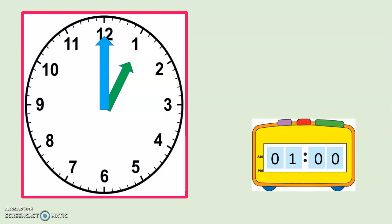Now we are going to see if we can tell the time. We have an analog clock in front of us. The long hand is on the 12 and the short hand is on the 1 — the time is 1 o'clock. The yellow digital clock at the bottom says 01:00, which is 1 o'clock in the morning. In the afternoon it will be 13:00 — that is also 1 o'clock. So 1 o'clock analog time: big hand on 12, small hand on 1; digital time is either 01:00 or 13:00.